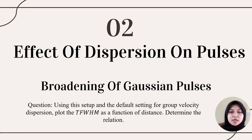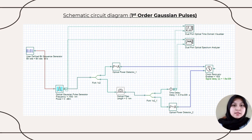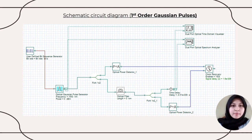My name is Aisha. I will explain the effect of dispersion on pulses. This section analyzes the broadening of Gaussian pulses by plotting the TFWHM as a function of distance and determining their relationship. This is the schematic circuit diagram for the first-order Gaussian pulses. The time delay is set to negative 0.51 nanoseconds so that the input and output graphs do not overlap. The optical fiber length is varied from 0 km to 50 km to observe pulse broadening using the dual-port optical time domain visualizer.